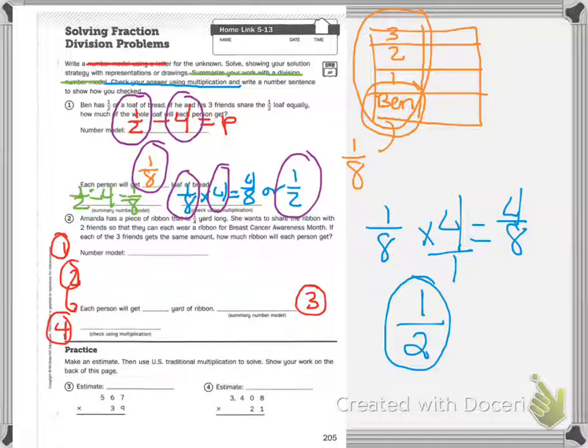Your practice is make an estimate, then use the U.S. traditional multiplication to solve. Show your work on the back of this page. So estimate first and then solve.